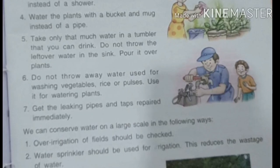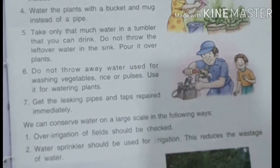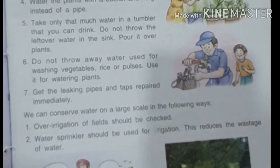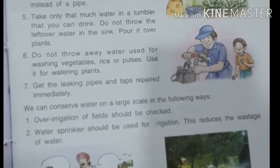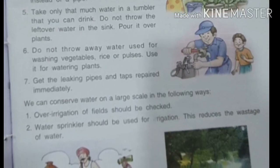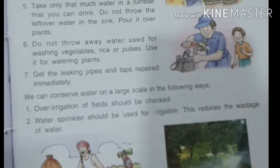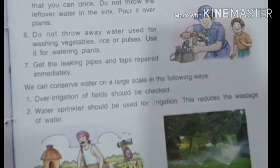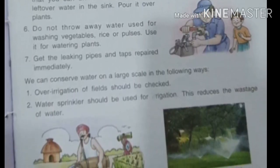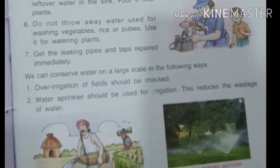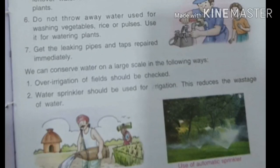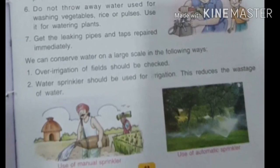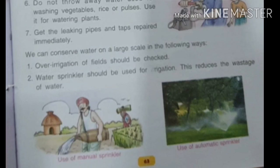Now let us learn how to conserve water on a large scale. Do not over-irrigate your fields. Many farmers use tube wells to water their fields and keep them running for long hours, but over-watering does not help crops grow better — that water just goes into the drain as wastage. You can use water sprinklers for irrigation; if your field is small, do it manually, or use automatic sprinklers for large fields.